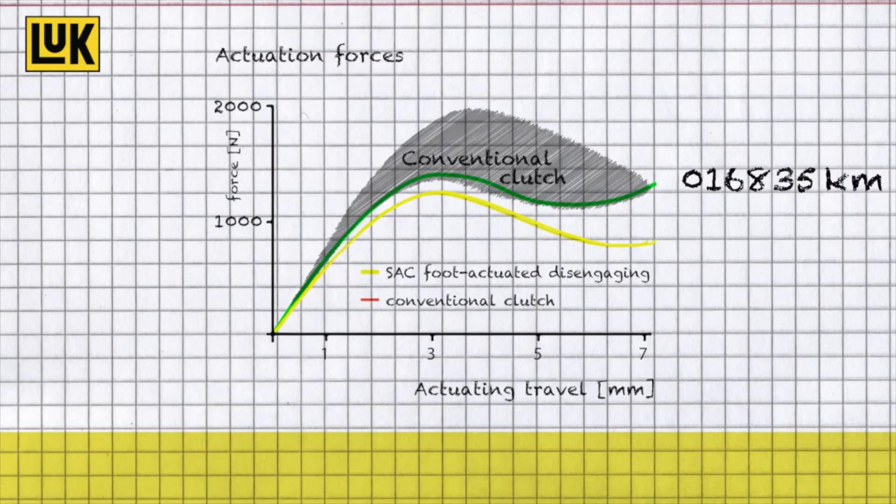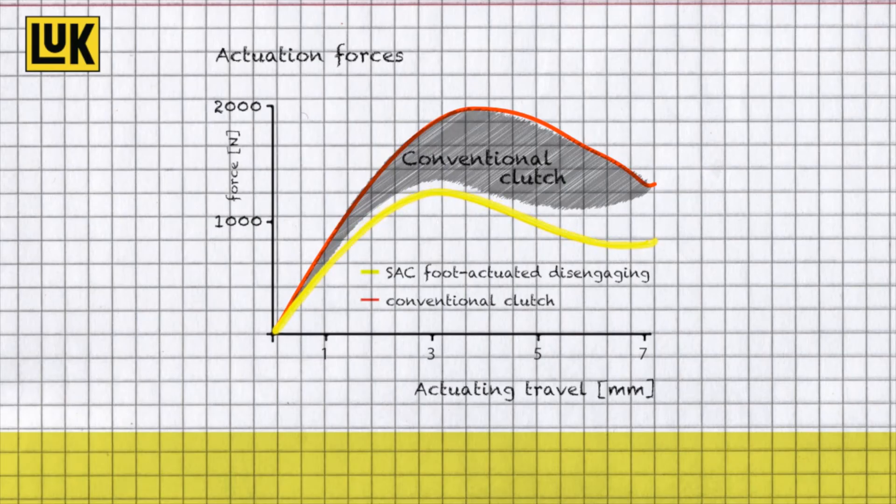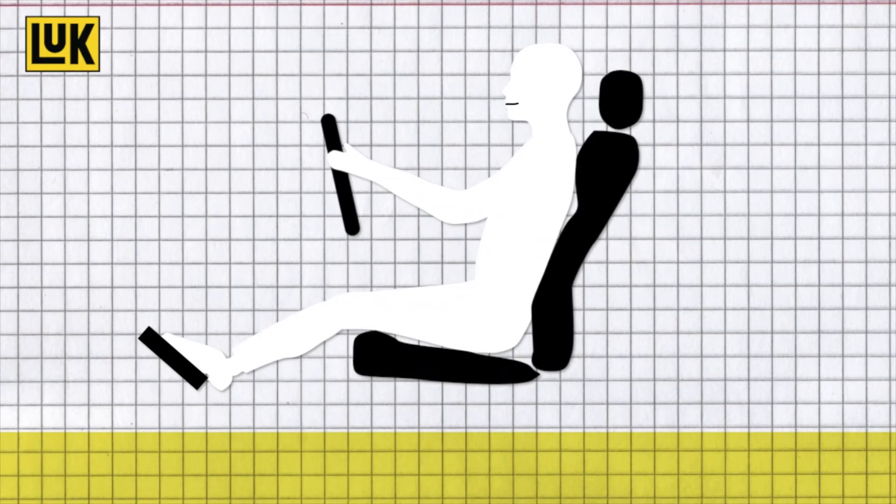A ramped ring compensates for the lining reduction under the pressure plate and helps maintain the clutch geometry over its service life. The actuation force now no longer increases and the comfort of easy pedal use is retained, equal to a brand new clutch.